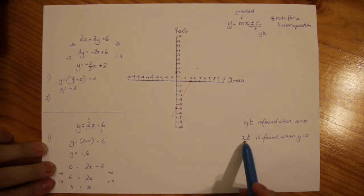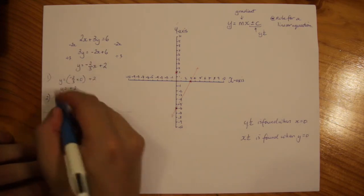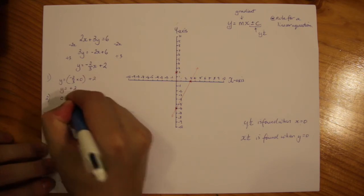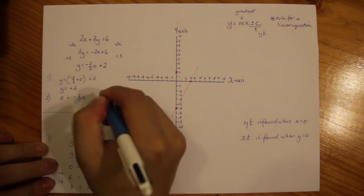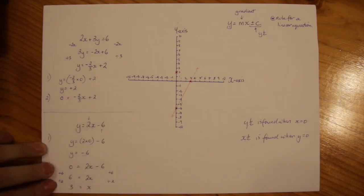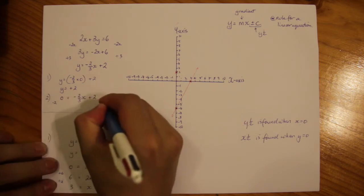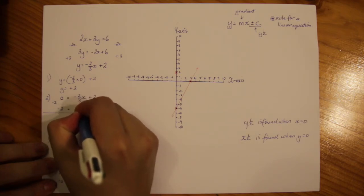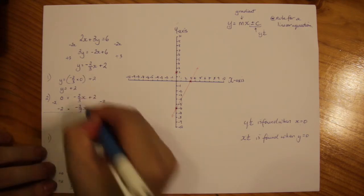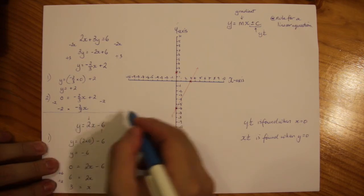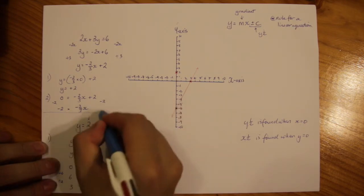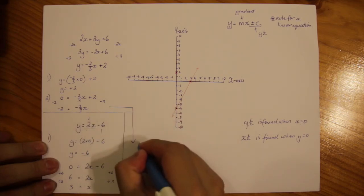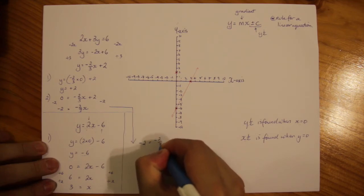Next step is to find the x intercept and I'm going to substitute y for 0. So here using this formula y is going to equal 0 now. That will equal minus 2 over 3x plus 2. I'm going to subtract 2 from both sides. So I have minus 2 equals minus 2 over 3x. The next thing that I want to do, I'm going to continue down here.